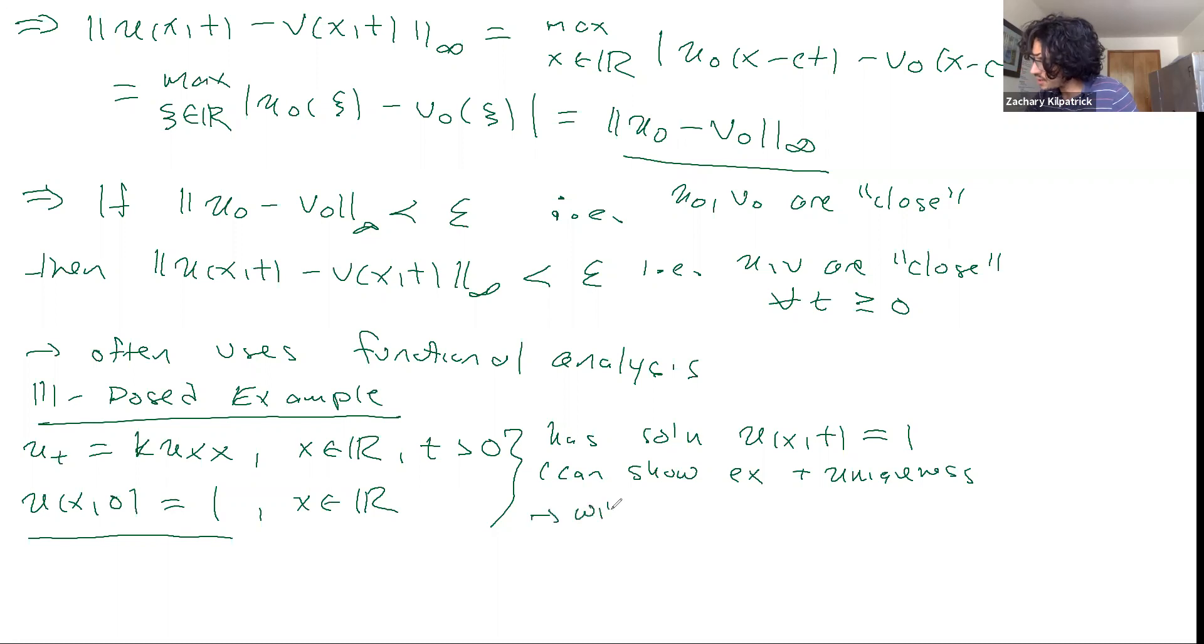But here we will focus on continuous dependence. Because there's an interesting thing that happens when we look at a nearby initial value problem. So here's a nearby initial value problem. It has the same PDE: v_t equals k*v_xx. But we're going to take sort of a peculiar set of initial conditions. v_n(x,0) is equal to 1 plus 1/n * sin(nx), where x lives in R here.